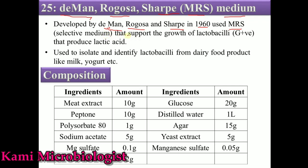This type of media mostly supports the growth of lactobacilli, which are gram-positive bacteria. These lactobacilli are actually producing lactic acid, which is mostly detected using this media. This media is specially used to isolate and identify different strains of lactobacilli from dairy products like milk, yogurt, etc.